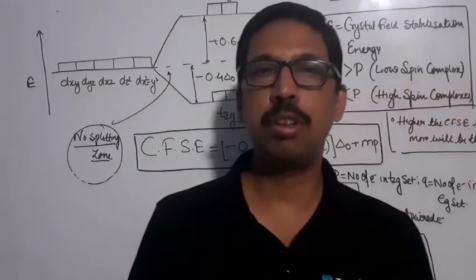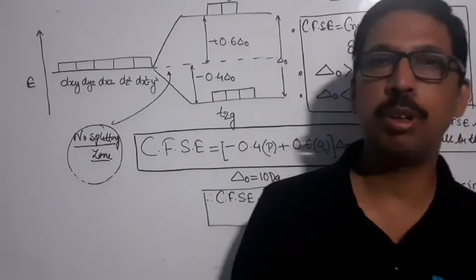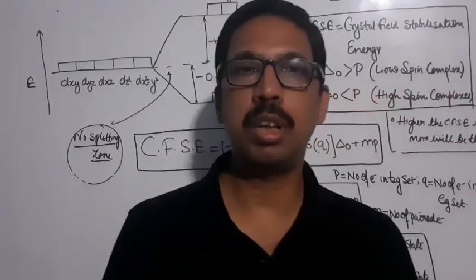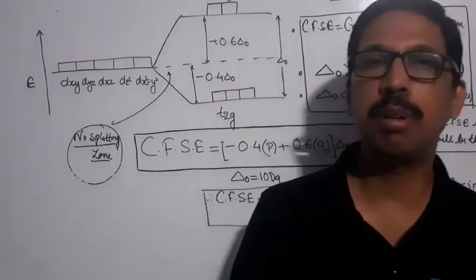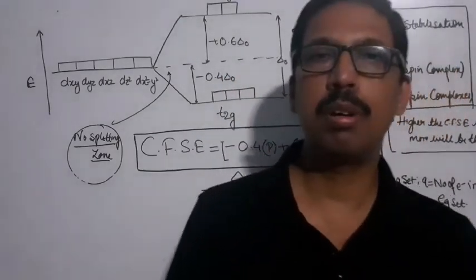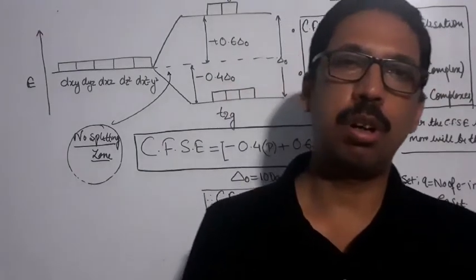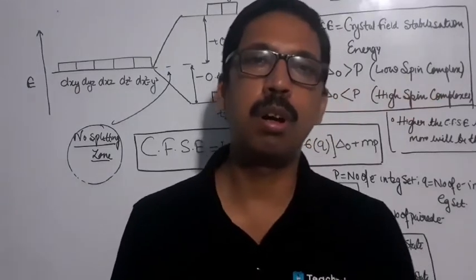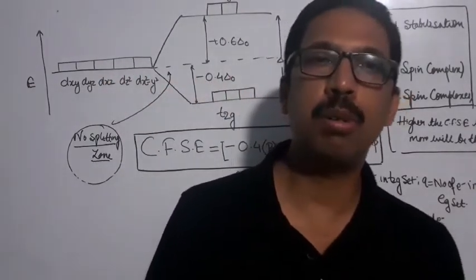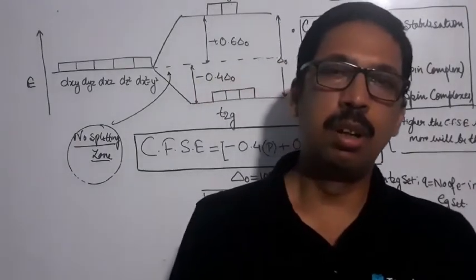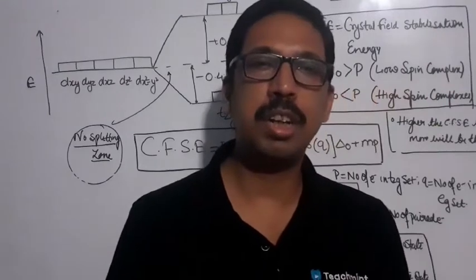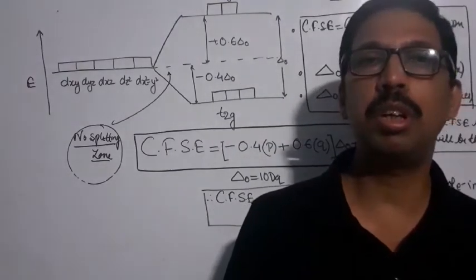The coordination number 6 corresponds to the octahedral complex. If we want to know which complex is more stable or less stable, we use the CFSE — Crystal Field Stabilization Energy value. In an octahedral complex, the central metal ion's d orbitals split into the T2G and EG sets.